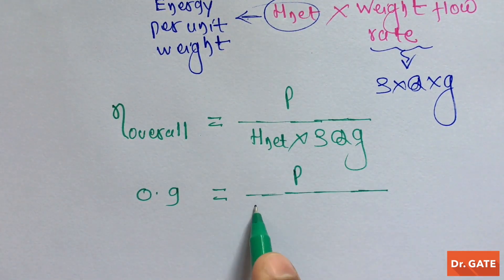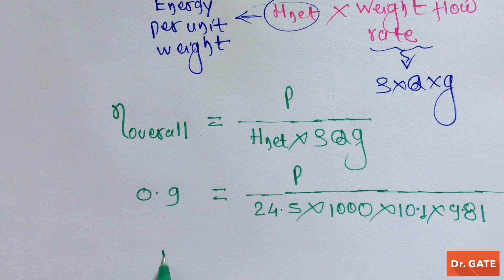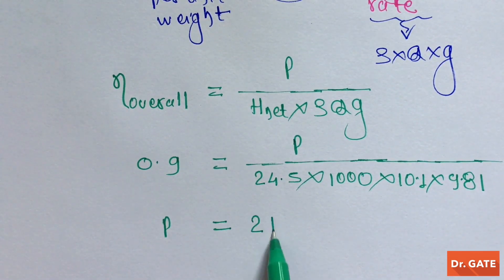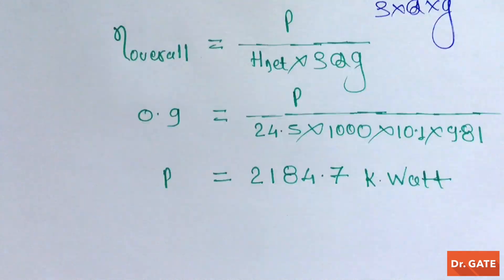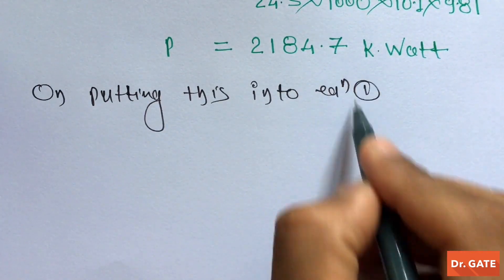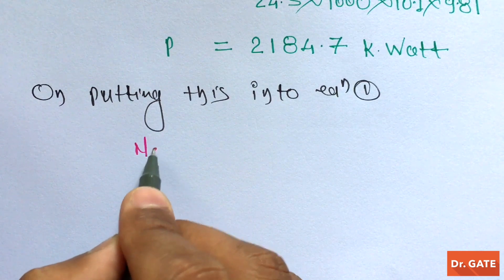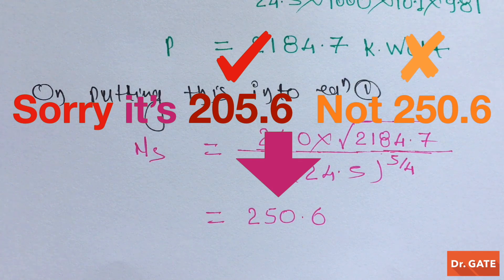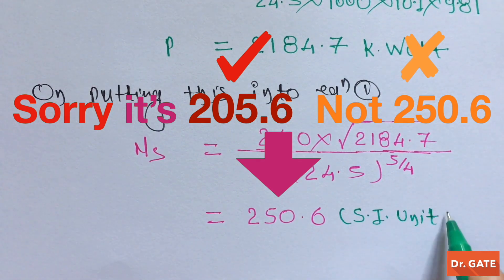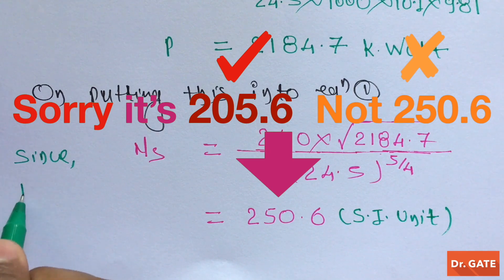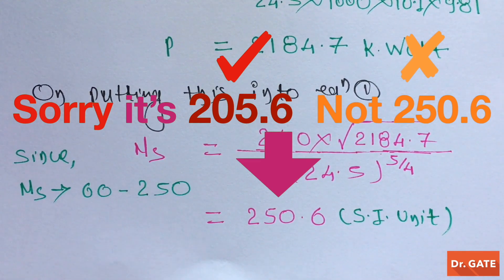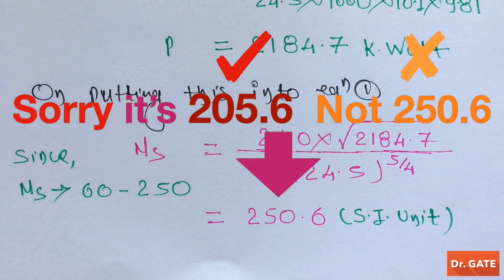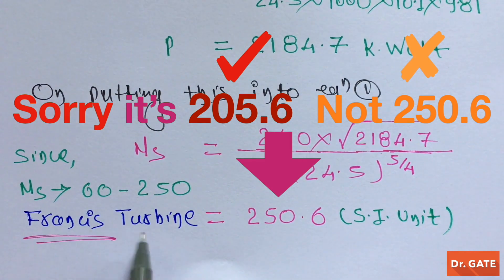And by putting given values into this equation, we will get net shaft power output required is this much kilowatt. So, on putting this into equation 1, we will get specific speed which is coming out 250.6. Since it is not dimensionless and its dimension is quite complicated, that's why we simply write SI unit instead of its unit. Since its specific speed is in between 60 to 250, so, being an engineer, we will recommend Francis Turbine for the site.